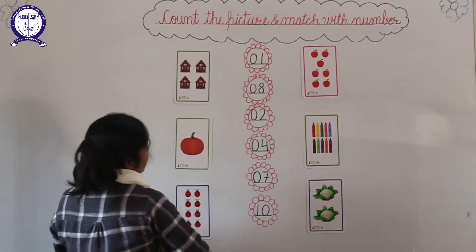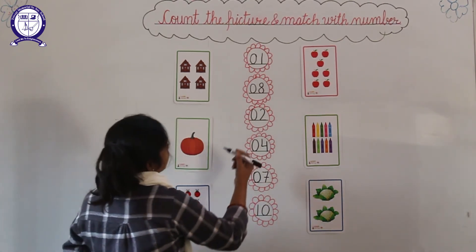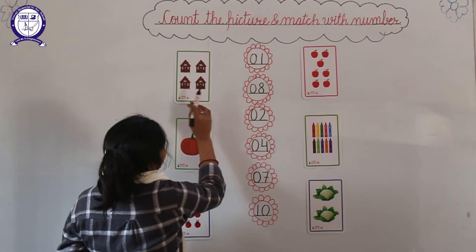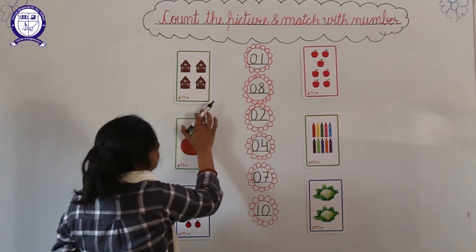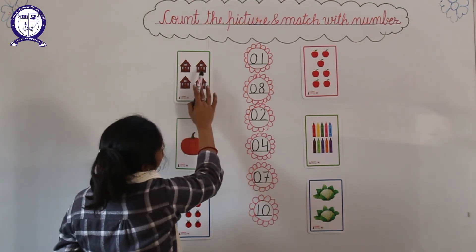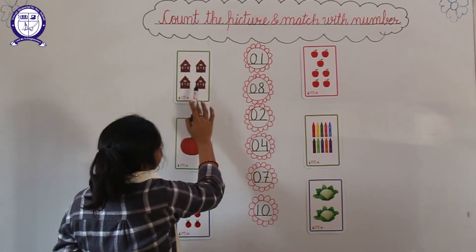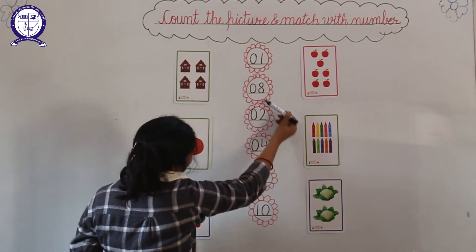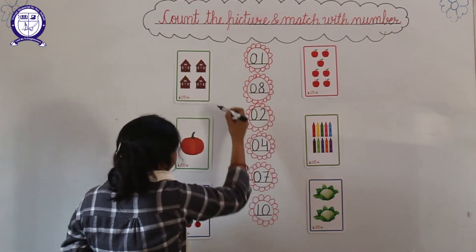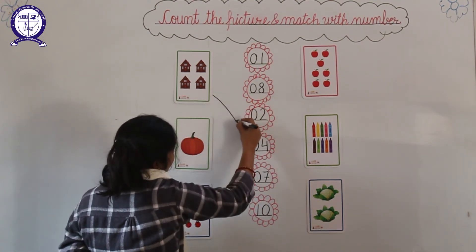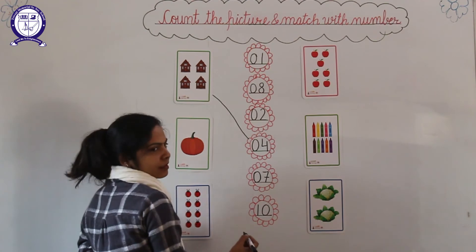Now we will start the matching. Look here — which picture is this? This is a hut. And how many huts? 1, 2, 3, 4. Where is 4? Here. And match with 4, like this.